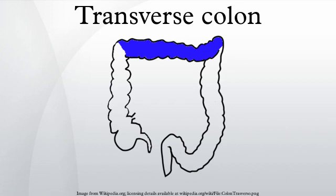It is almost completely invested by peritoneum and is connected to the inferior border of the pancreas by a large and wide duplicature of that membrane, the transverse mesocolon.